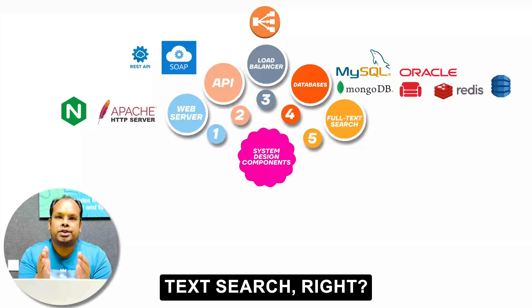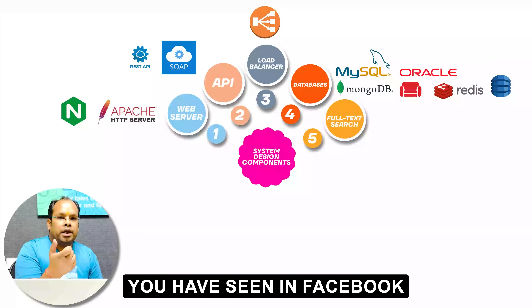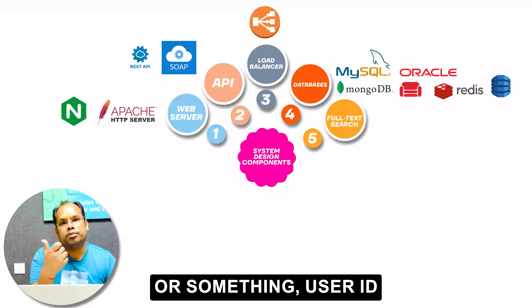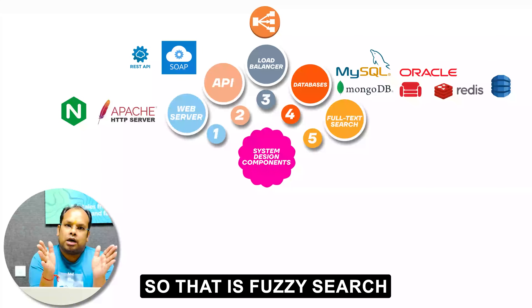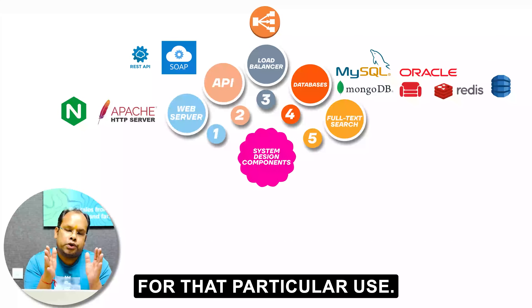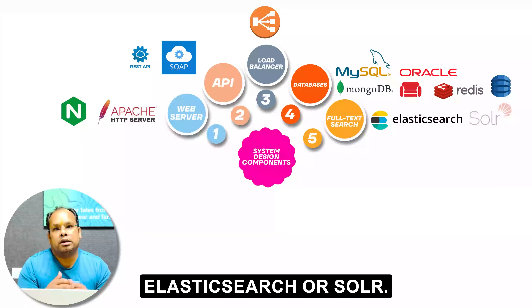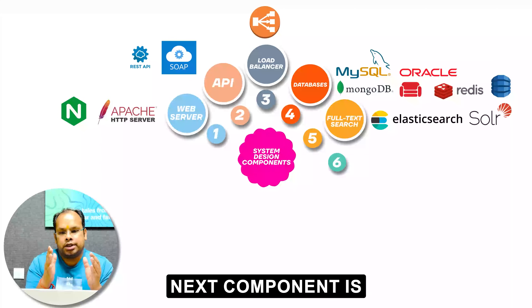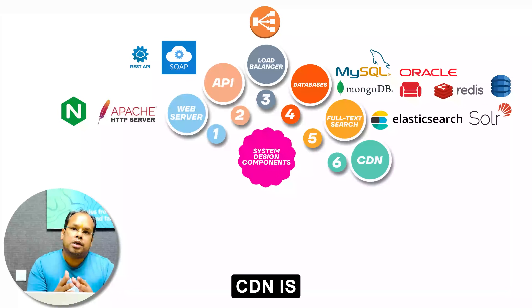The next component is full-text search. You've definitely seen in Facebook that you can search for a friend by name, user ID, or email — that is a fuzzy search or full-text search. For that use case, you can use Elasticsearch or Solr.